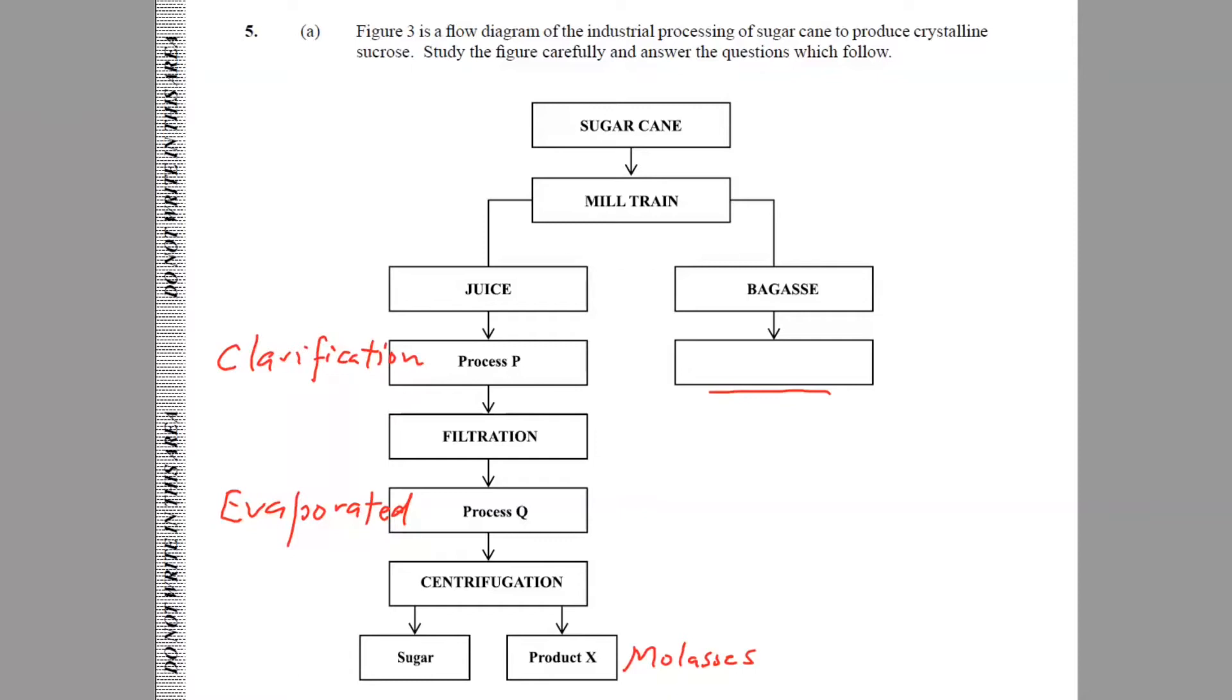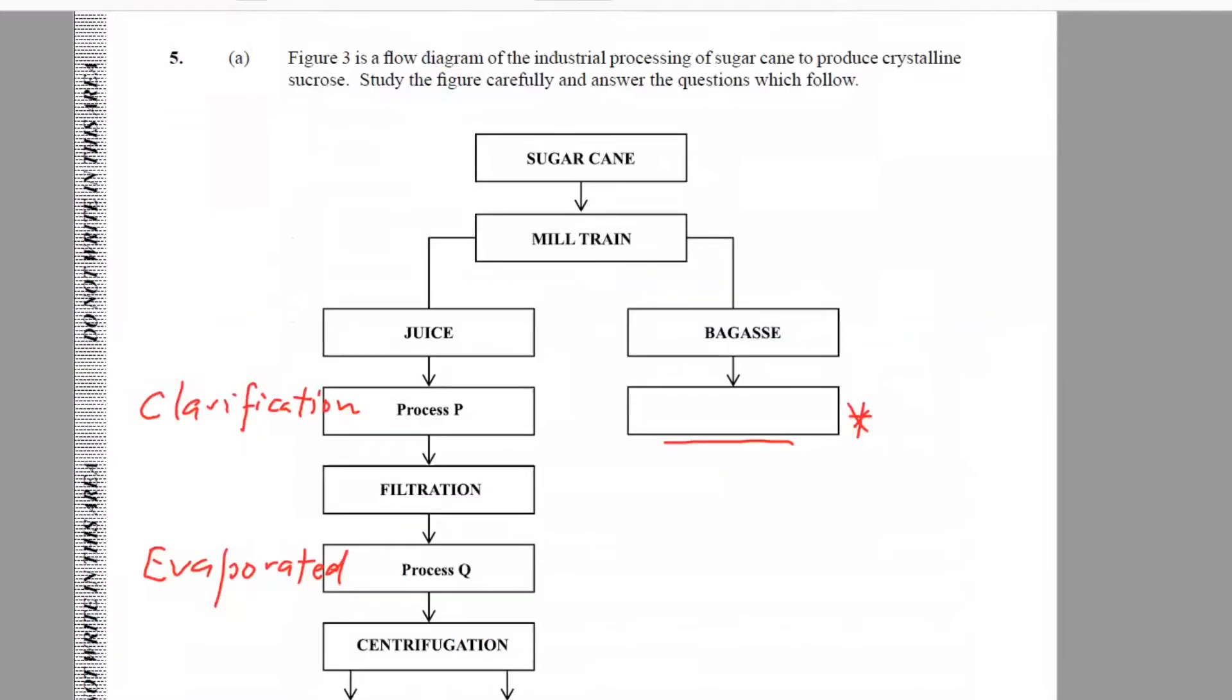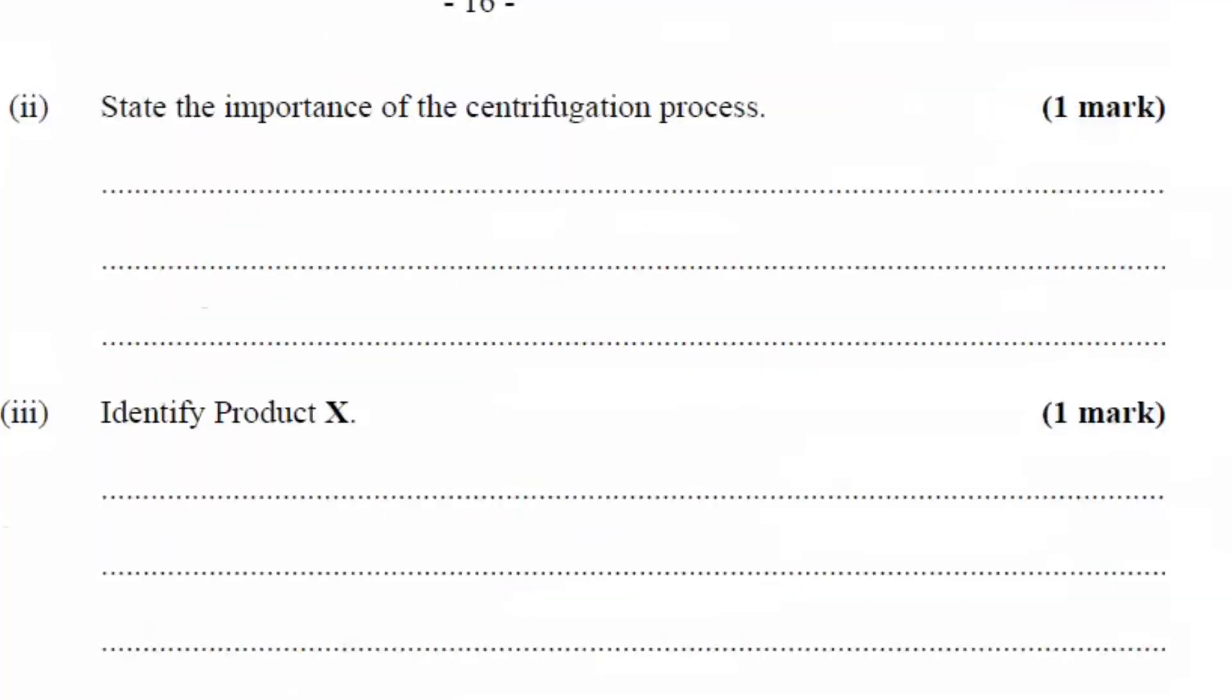The bagasse has several uses. The bagasse can be used to make bagasse board and it can also be sent to the boiler room where it is used to heat large vats of water from which hydroelectricity is generated. We'll bear that in mind for that big gap right there. We're just going to go ahead and fill in this process. Process P is clarification. Process Q is evaporation.